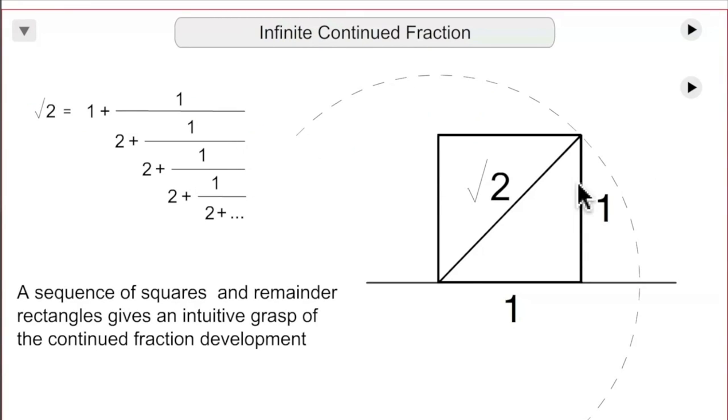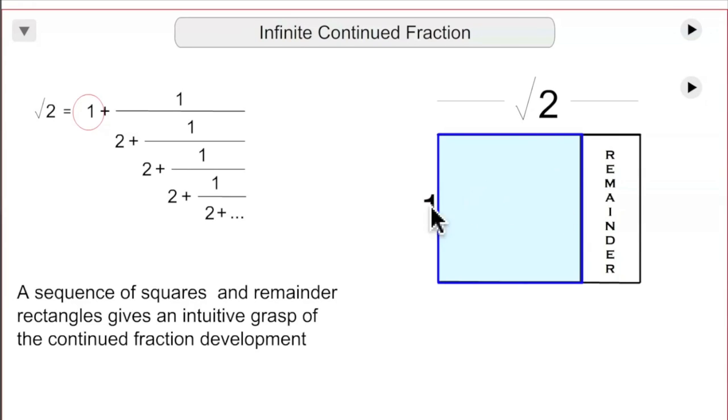Another method of demonstrating it, you take the square, revolve the diagonal around. Now you've got a square plus a remainder rectangle. One is the whole number representation. The remainder is a fractional representation. You divide that. Now you get two squares. The width goes into the length two times with a remainder rectangle.